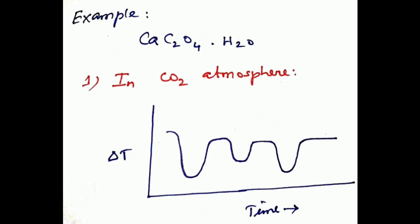Now we discuss one example: calcium oxalate monohydrate. This compound under different conditions, such as carbon dioxide atmosphere, air atmosphere, or nitrogen atmosphere, produces different delta T versus time graphs. First is carbon dioxide atmosphere.